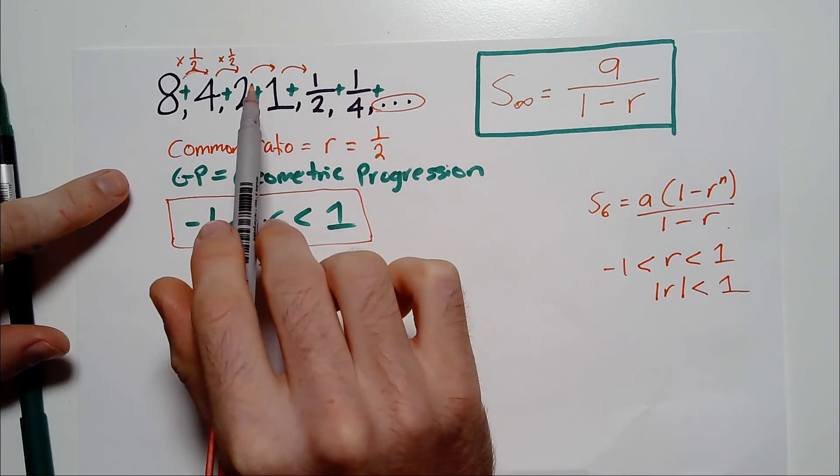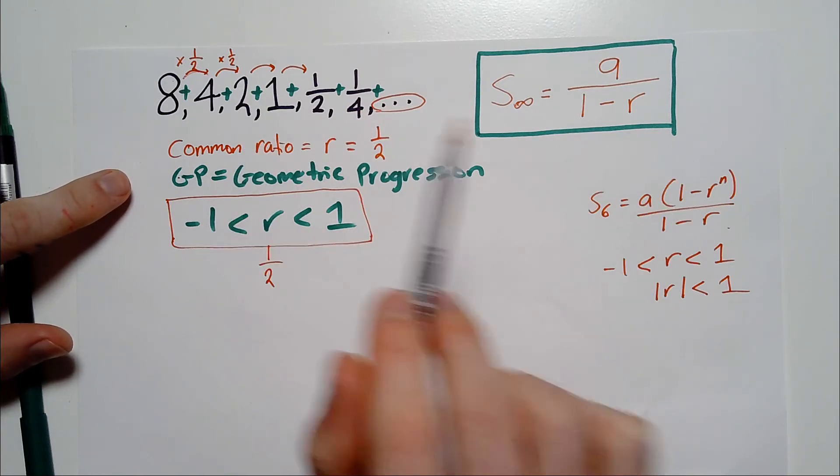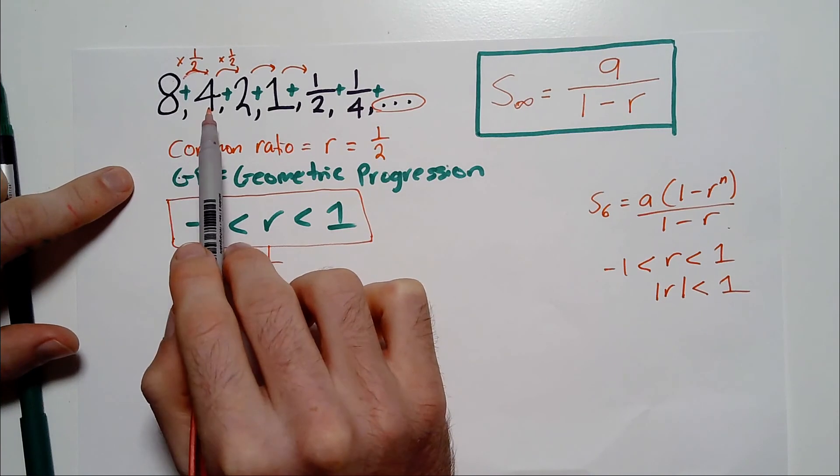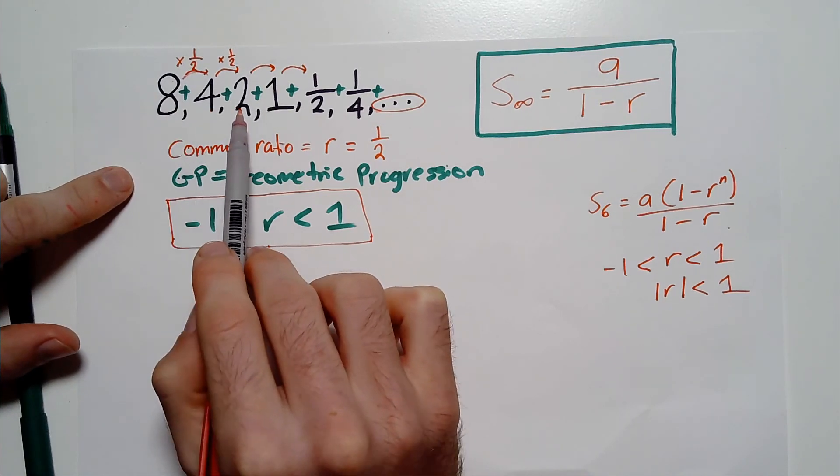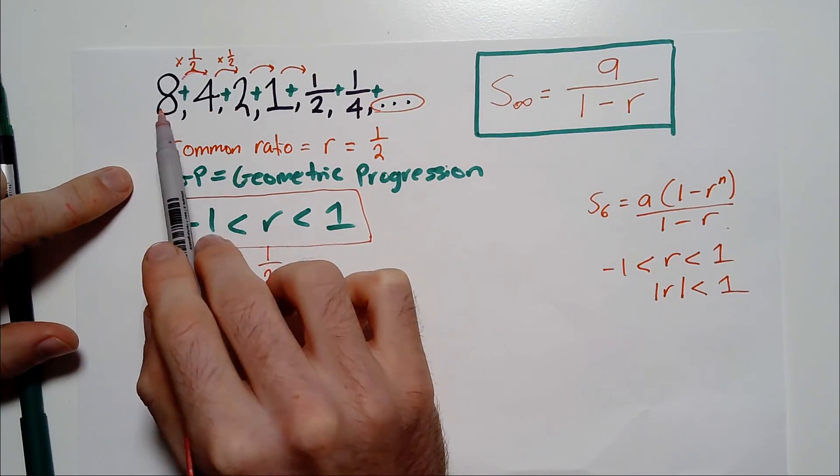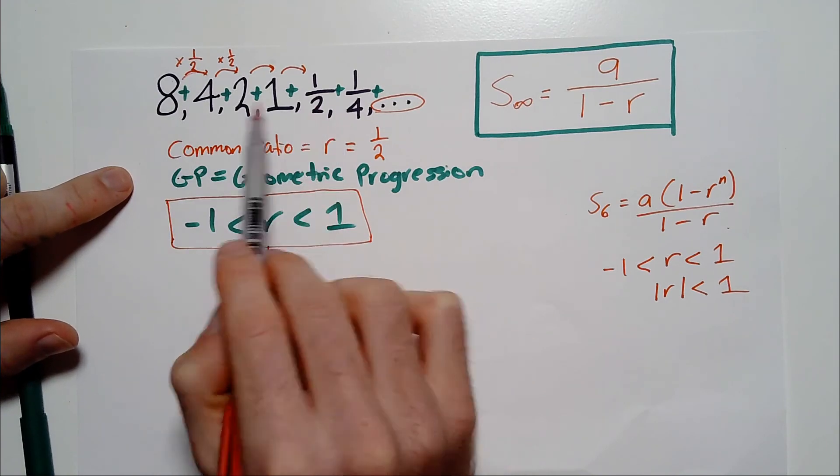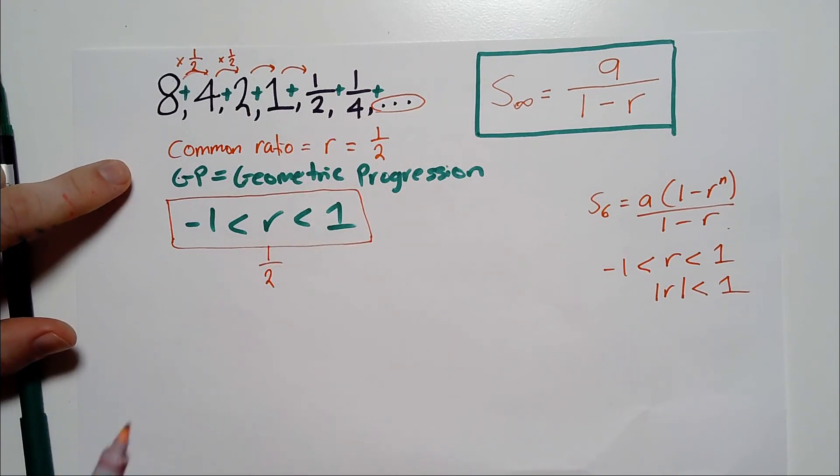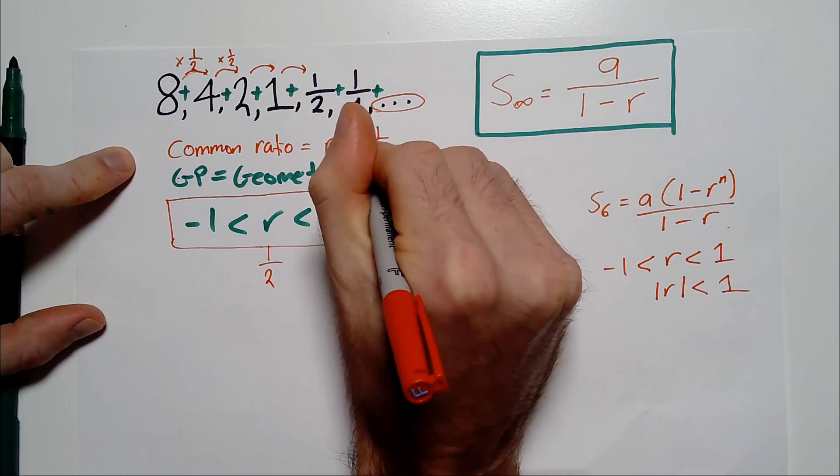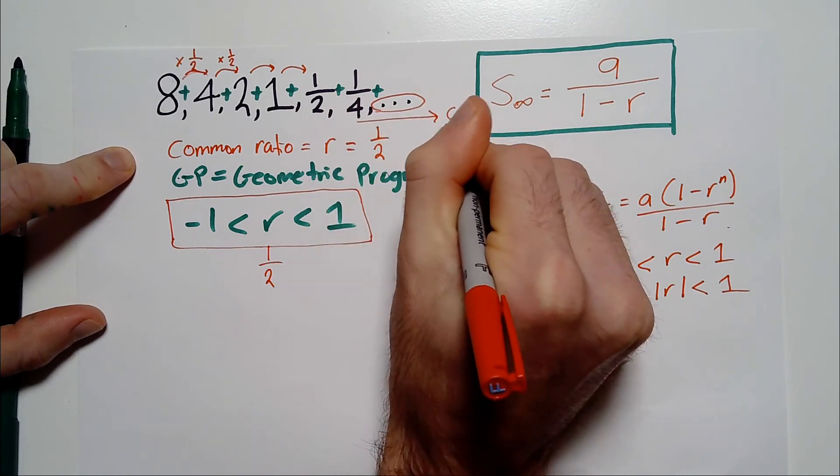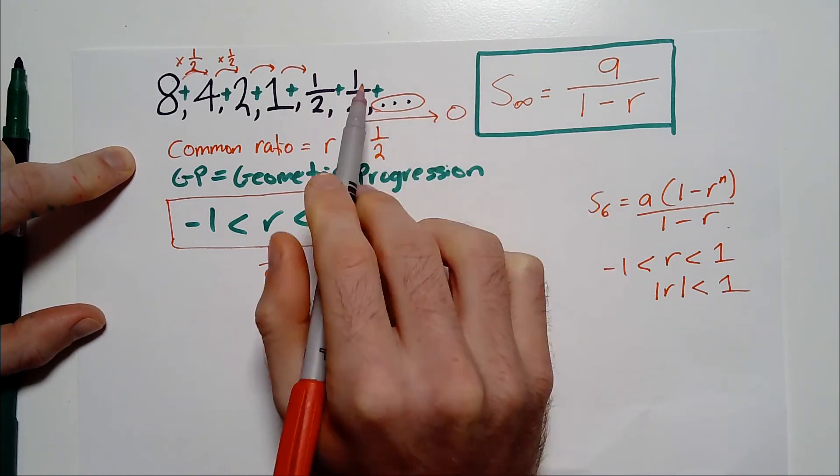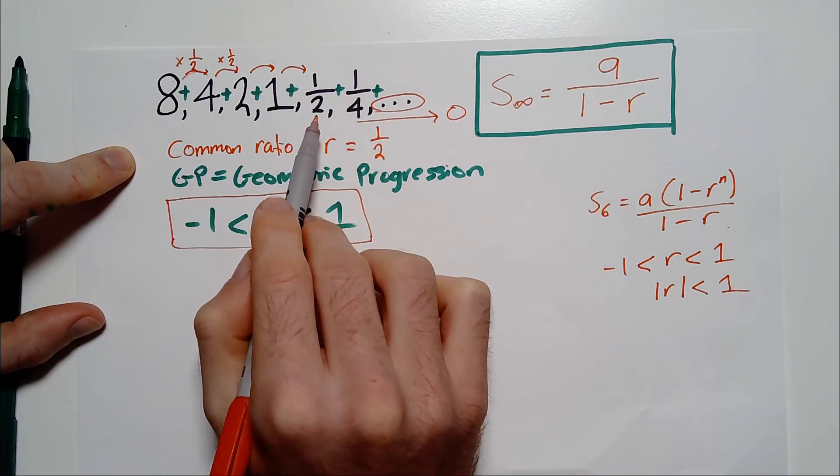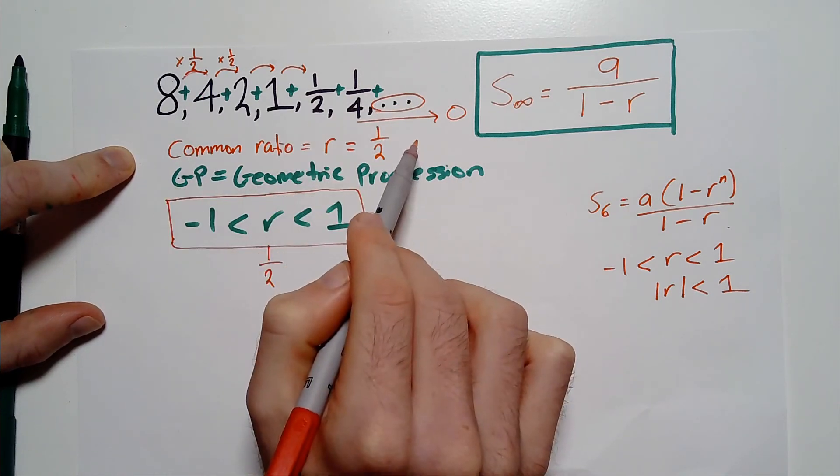The numbers are not going to keep getting bigger. So we wouldn't have a limit in sum if it went 8 followed by 16 followed by 32, for instance, because those numbers are doubling. The numbers that we're adding aren't getting smaller. We need the numbers that we're adding to tend towards 0. These need to move towards 0. See how a quarter is closer to 0 than 8? It's also closer to 0 than a half. That's going to keep happening.